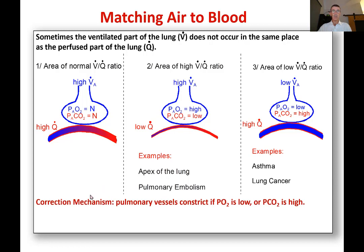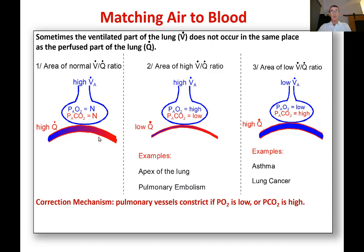So there are correction mechanisms to try and make sure that ventilation is matched to perfusion. The pulmonary vessels have precapillary sphincters that sense the oxygen and CO2 pressures in that region of the lung. If the pressure of oxygen is low or the pressure of CO2 is high, you get constriction of those vessels. So imagine a patient with asthma where the airway is narrow — there's poor ventilation to that part of the lung, the oxygen pressure is low, and the CO2 pressure is high. That's sensed by the oxygen-sensitive and CO2-sensitive tissues in that precapillary sphincter, and it narrows. So now you've got decreased blood supply coming to that region, which is how the lung tries to make sure that perfusion is always going to areas where there's good ventilation.